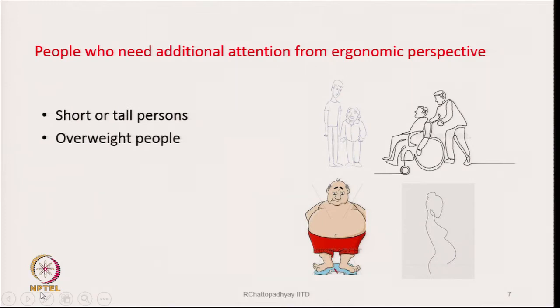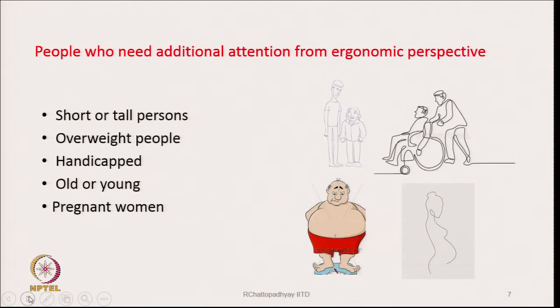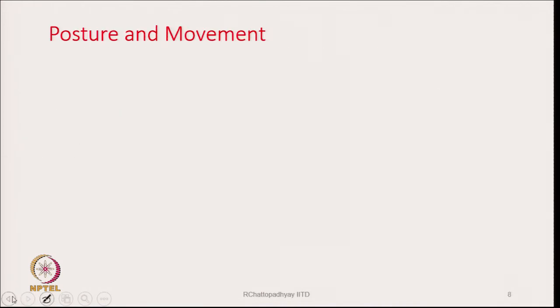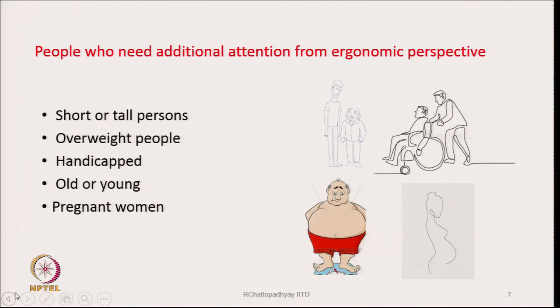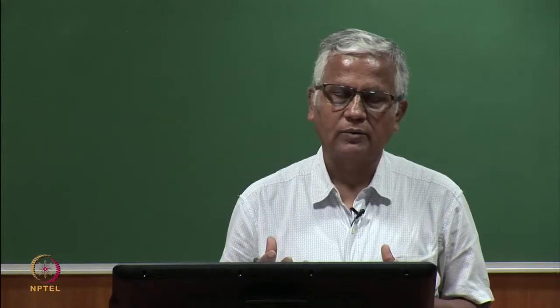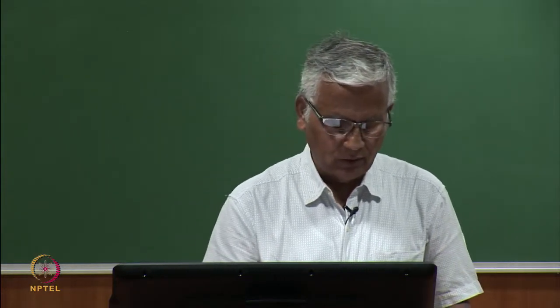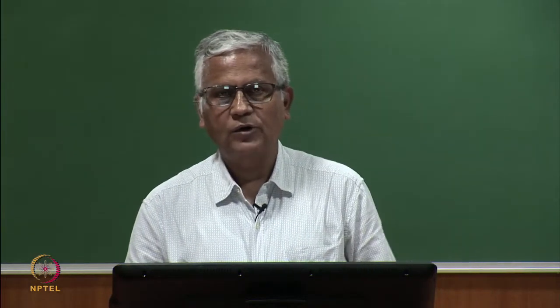All types of people are around us, and depending on the type of product we are making, we have to identify who our potential customers are. The design should suit each and every type of person — that should be the ideal situation. Sometimes we may not be able to achieve a product that suits everybody, but some modifications or adjustments may be possible to make it suitable for each and every one.